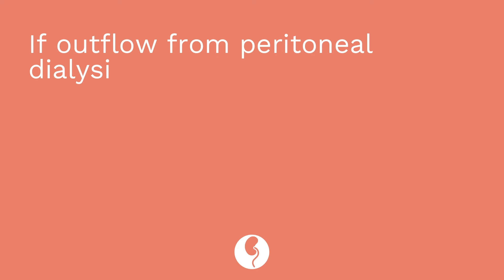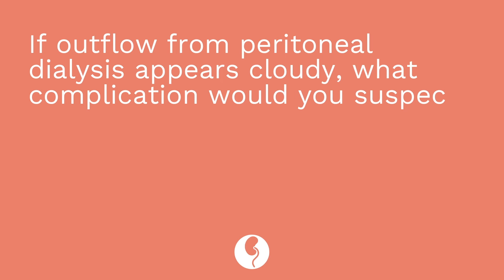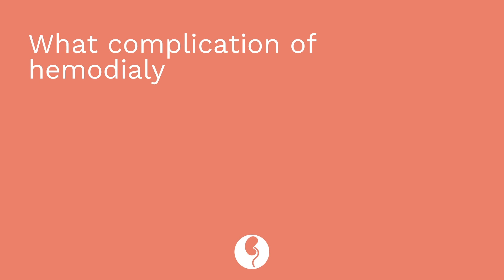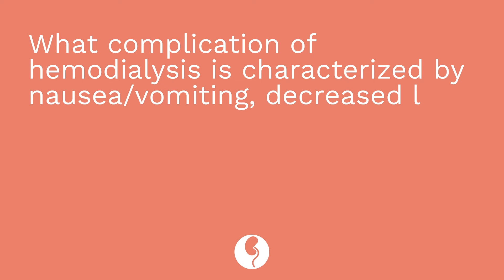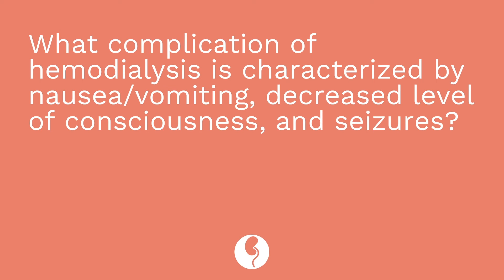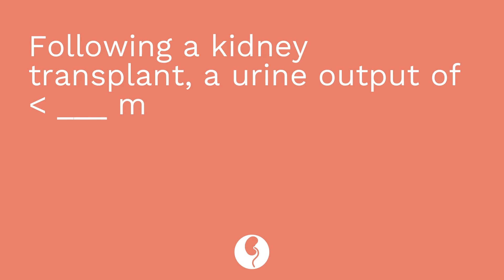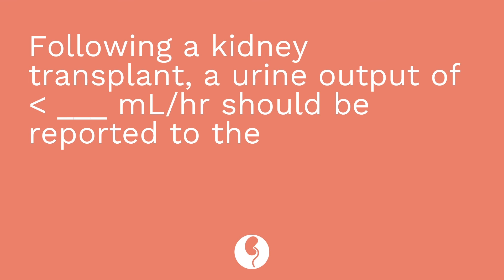It's time for a quiz — three questions. First: if outflow from peritoneal dialysis appears cloudy, what complication would you suspect? The answer is peritonitis. Second: what complication of hemodialysis is characterized by nausea and vomiting, decreased level of consciousness, and seizures? The answer is disequilibrium syndrome. Third: following a kidney transplant, a urine output under how many milliliters per hour should be reported to the provider? The answer is 30.